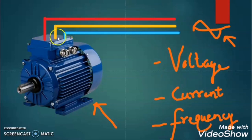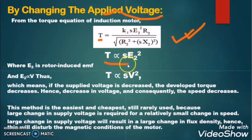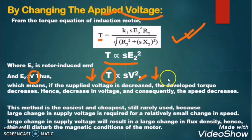Let us first change the power supply voltage to the induction motor and analyze what is happening with the speed. As we know, the torque of the induction motor is equal to K1 × S × E2² × R2, divided by R2² + S × X2². The torque is directly proportional to the induced EMF in the rotor, and the induced EMF is directly proportional to the applied voltage. So the torque is directly proportional to voltage squared. If we decrease the voltage, we decrease the torque, and as the rotating force reduces, the speed of the motor will reduce.